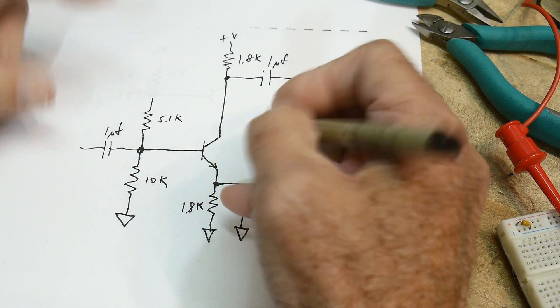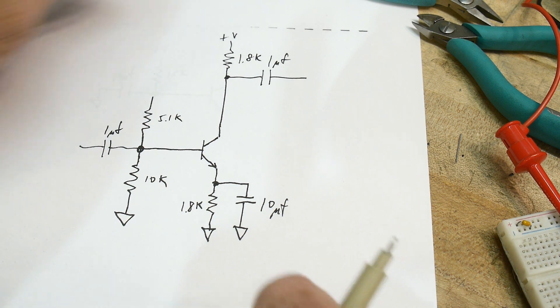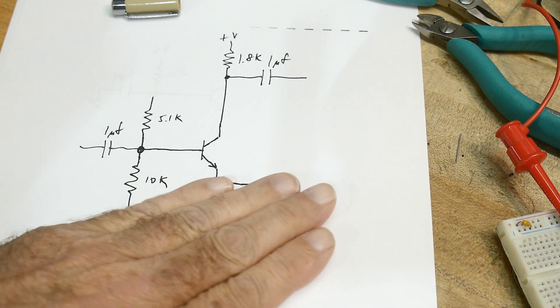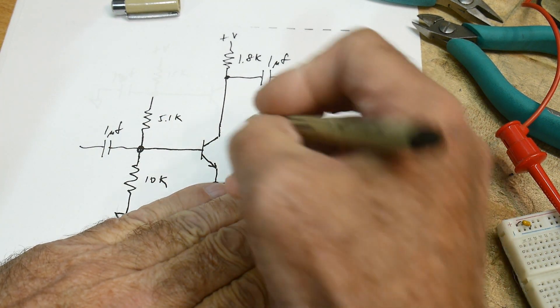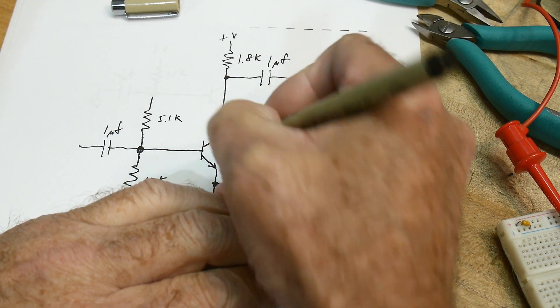So we know that the AC path is basically this is ground, and so there's a resistance here. We'll call it our little RE, the emitter resistance.